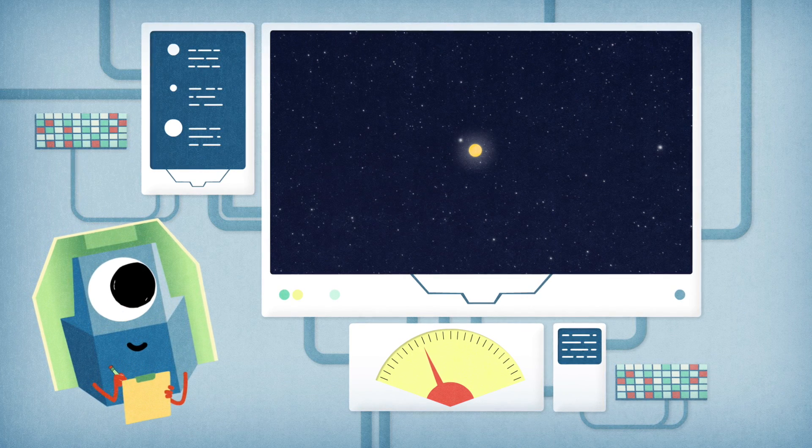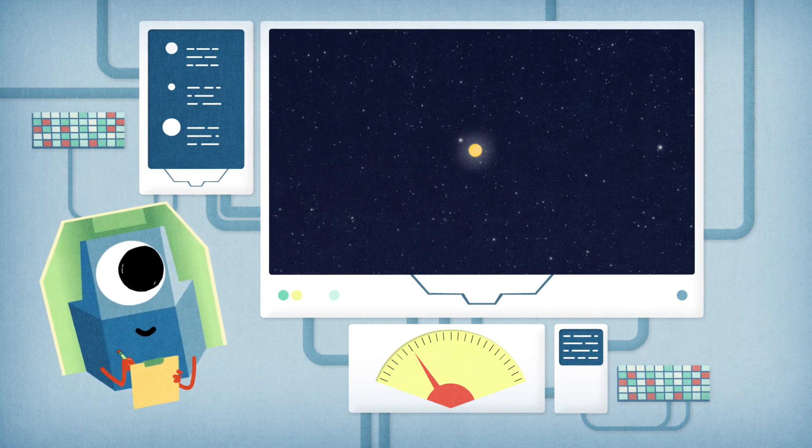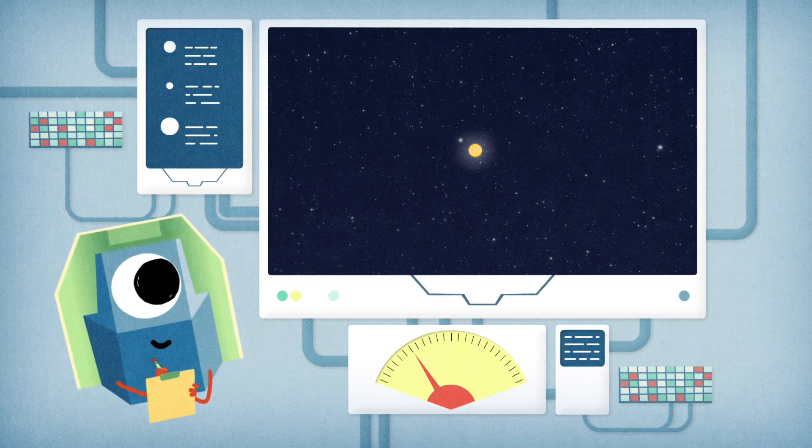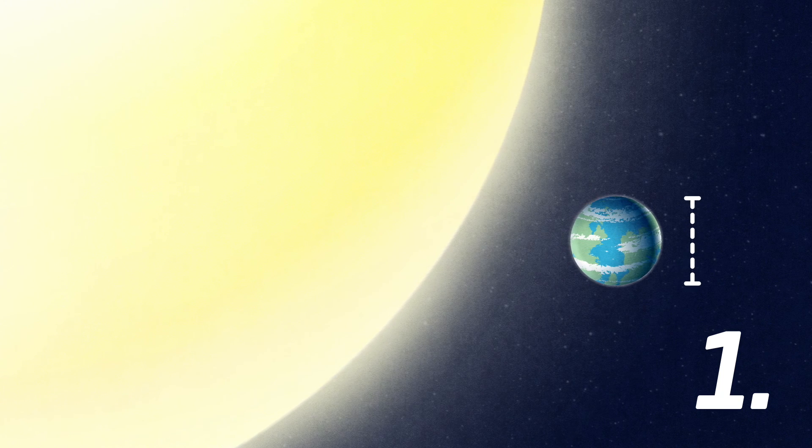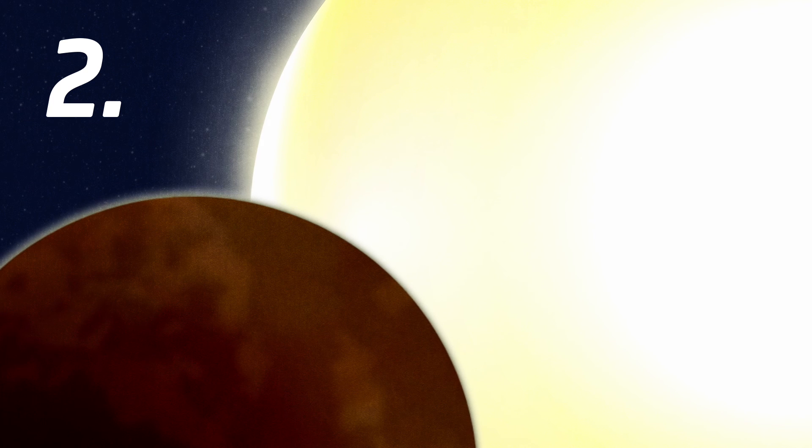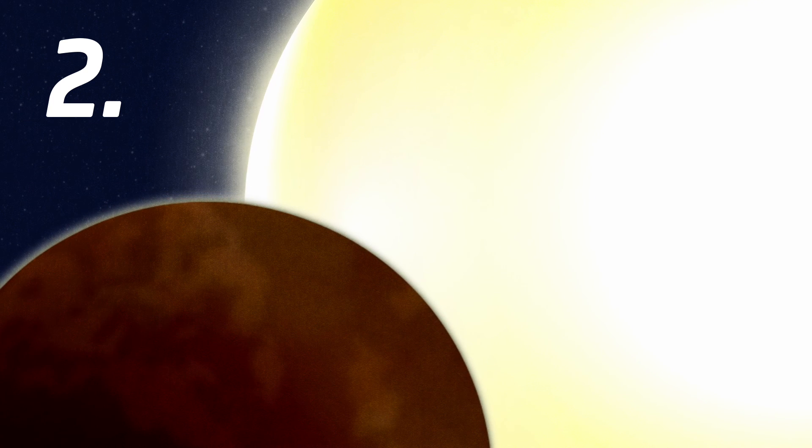As a photometer, an instrument that measures light, CHEOPS will measure starlight with incredible precision and focus on two big goals: very accurately measure the sizes of small planets, and discover more about the atmospheres of big exoplanets orbiting very close to their stars.